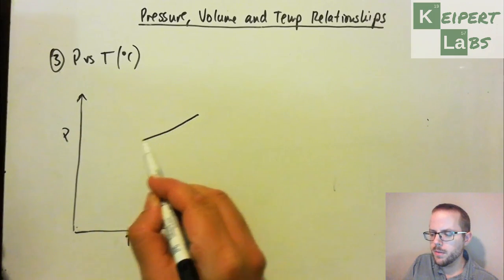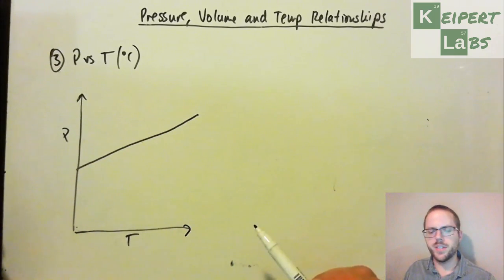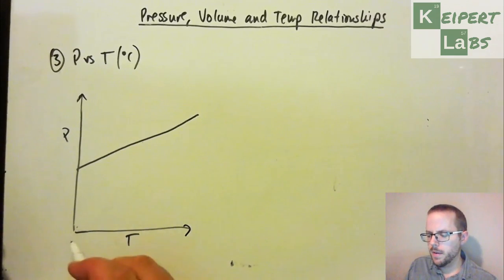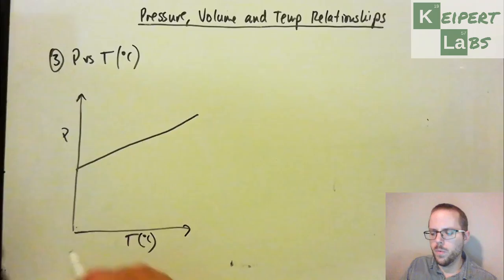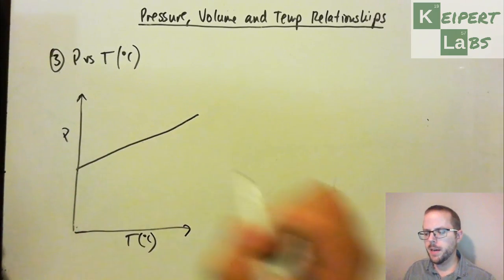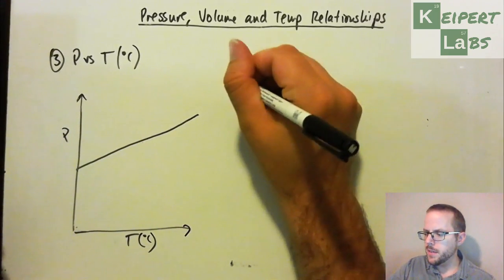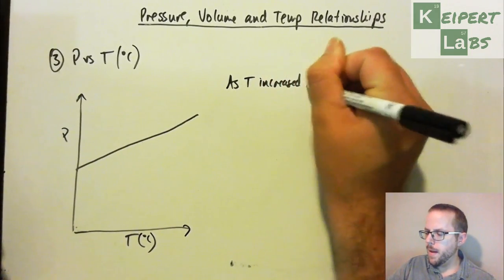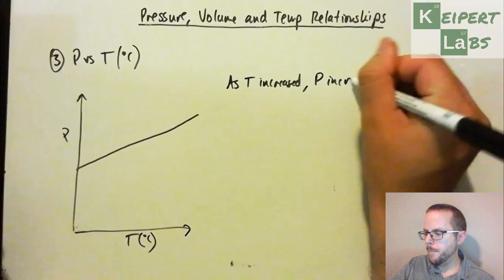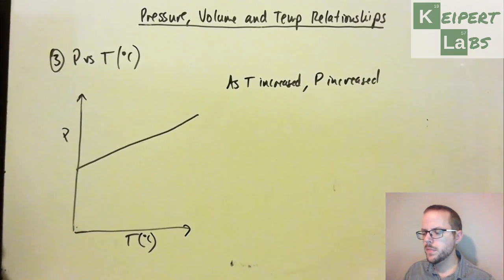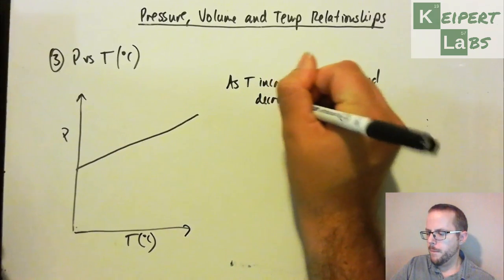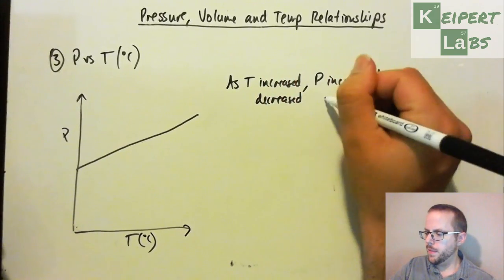So as you started with the temperature at a certain value, and then as you decreased it, you eventually got to this point at zero Celsius, where our pressure was up here. So as temperature increased, the pressure increased. So you could also then look at it in terms of decreased and then decreased.